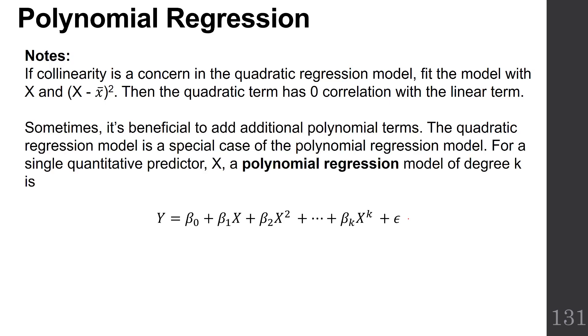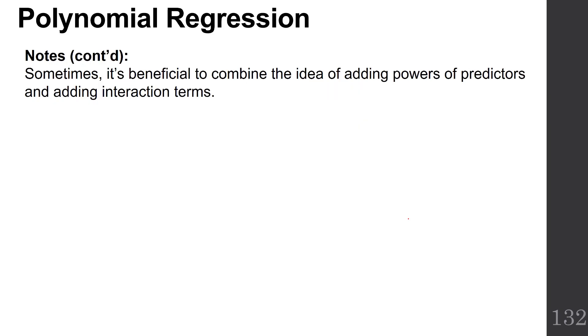Sometimes it's beneficial to add additional polynomial terms: a cubed term, one to the 4th power, etc. The quadratic regression model is a special case of the general polynomial regression model. For a single quantitative predictor X, a polynomial regression model of degree k is Y = β₀ + β₁X + β₂X² + β₃X³ + ... + βₖXᵏ plus some error.